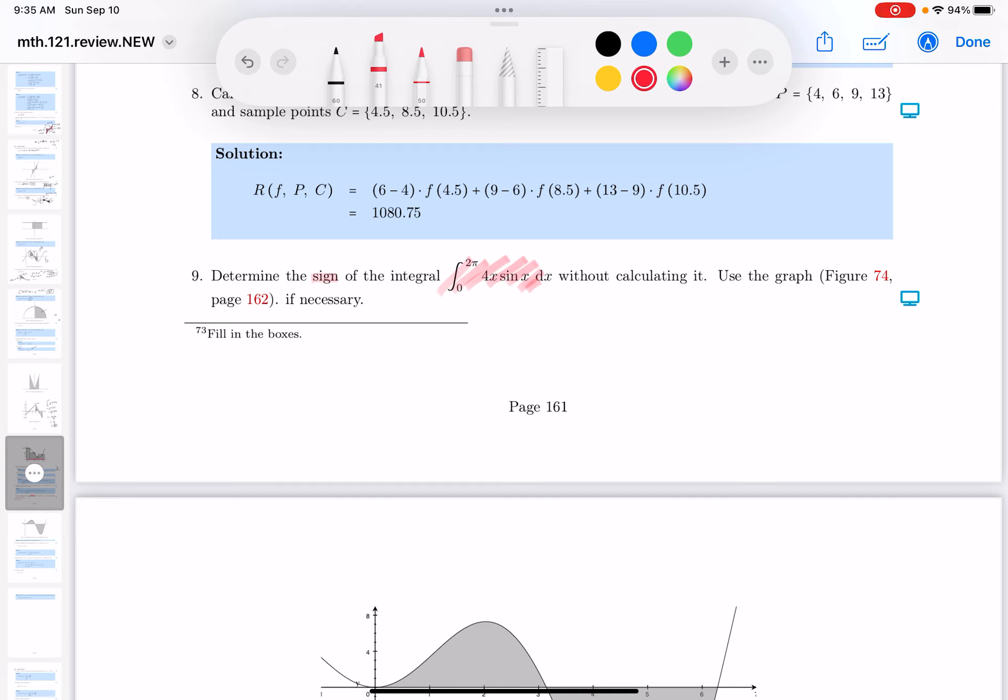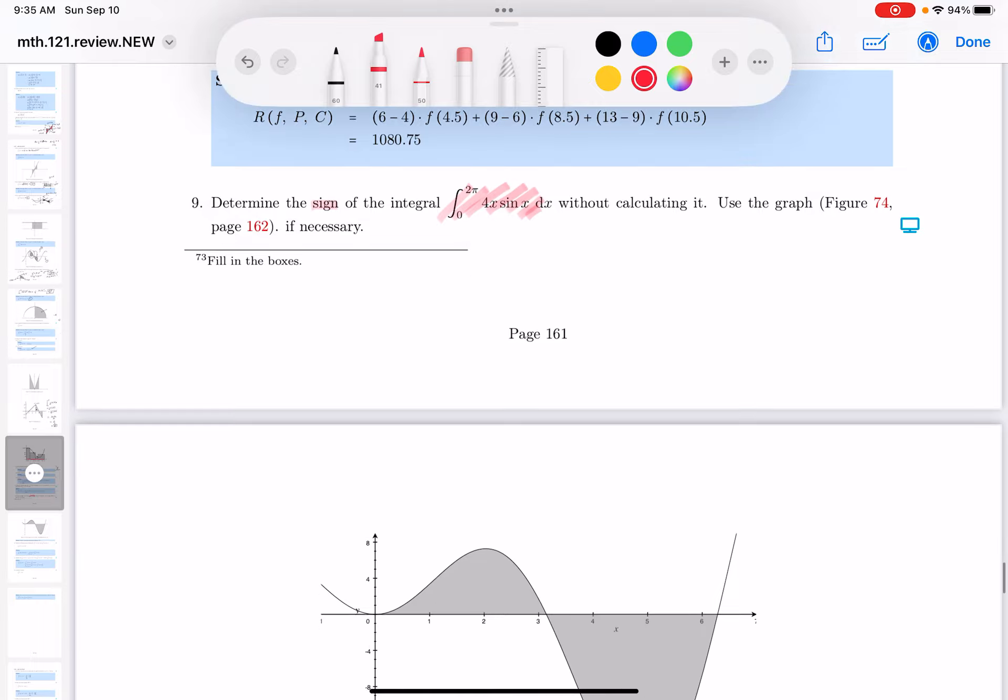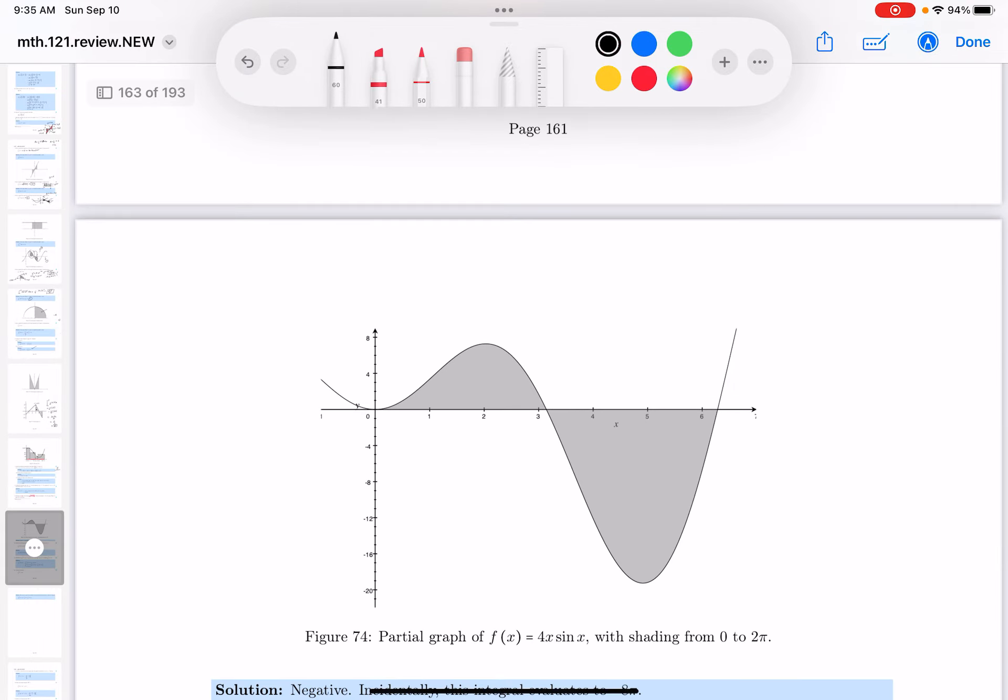They gave me a graph of this thing over here. I'll write that down for you. This is the graph of f(x) equals 4x sine x. That's clearly being indicated over here.